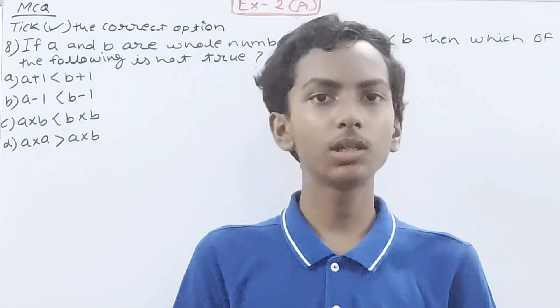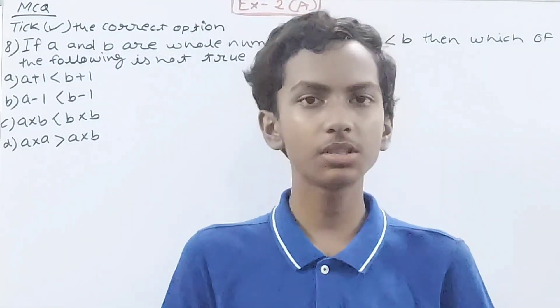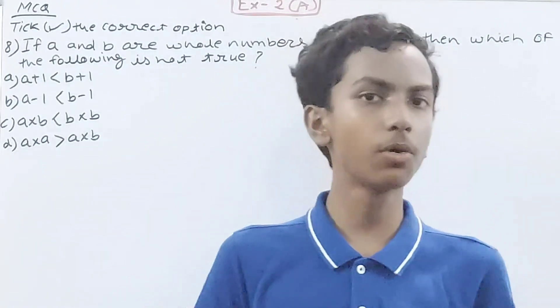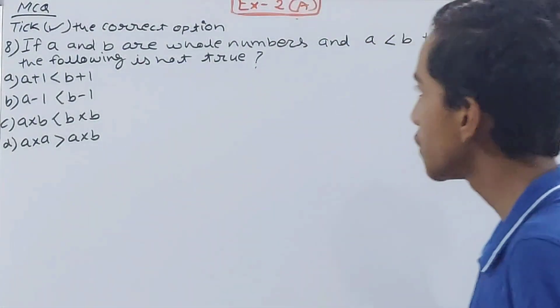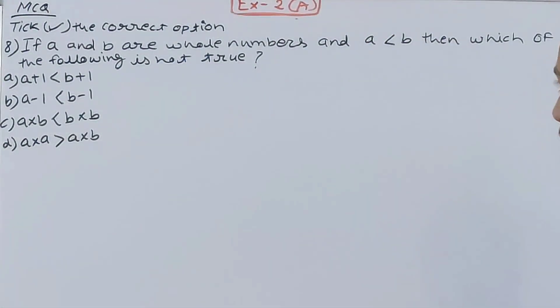Welcome back to my YouTube channel, Okay Learning. In this video we are going to solve ICSE Mathematics Class 6, Chapter 2 Whole Numbers, Exercise 2A, Question 8. If a and b are whole numbers and a is less than b, then which of the following is not true?